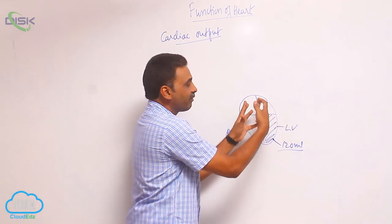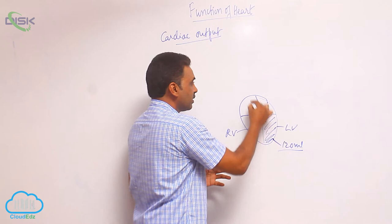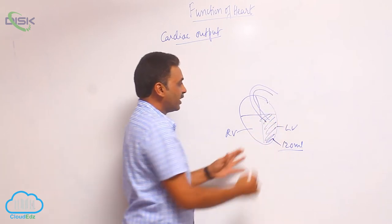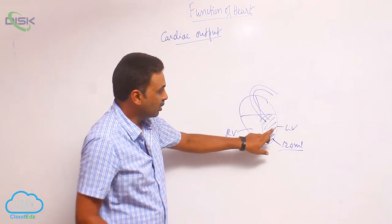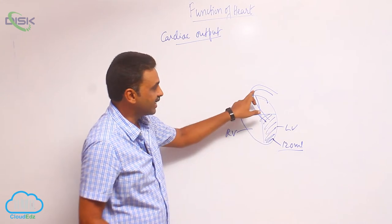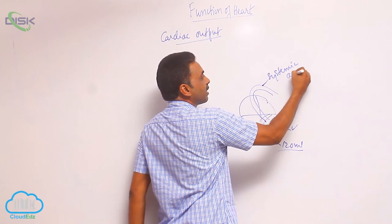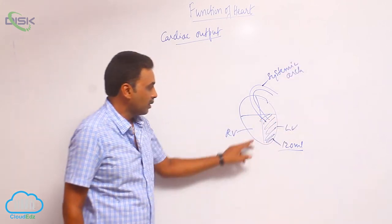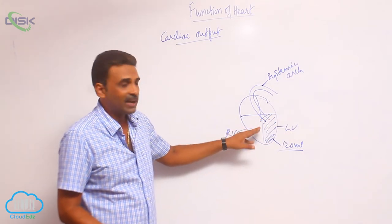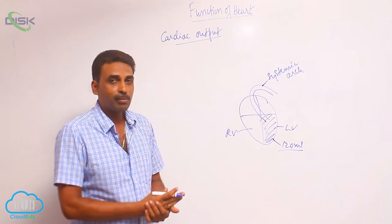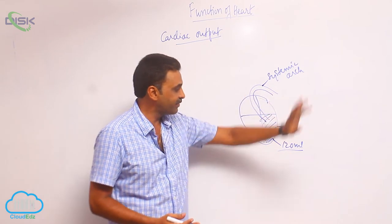Now it underwent contraction. Ventricles have undergone contraction, so blood from the left ventricle has entered into systemic arch. Likewise, from right ventricle, blood will be pumped out by pulmonary arch. We are taking the left side.